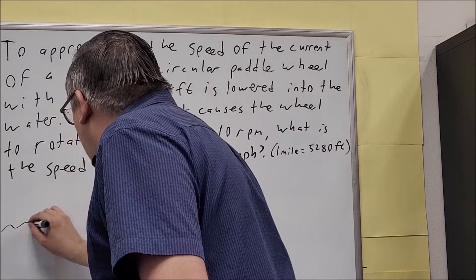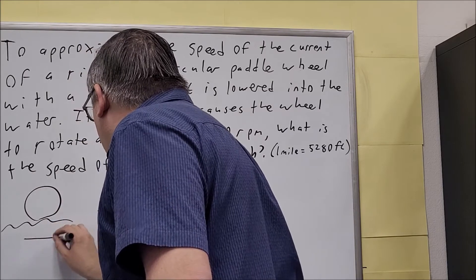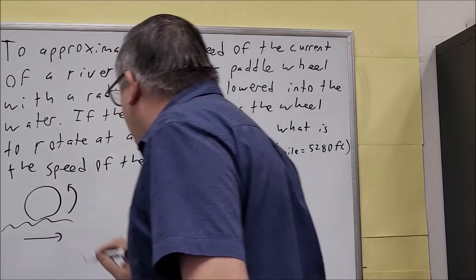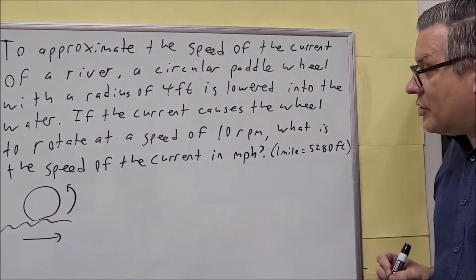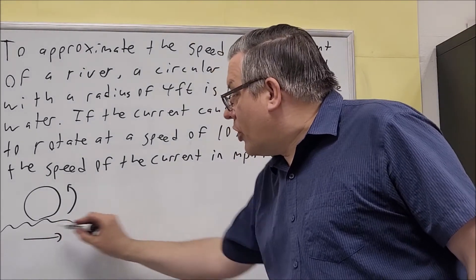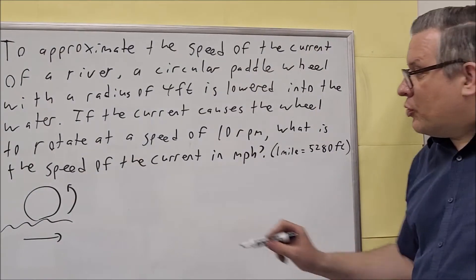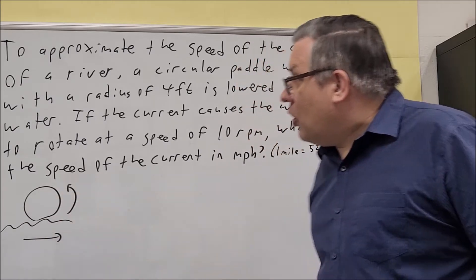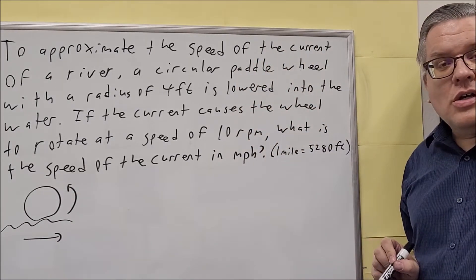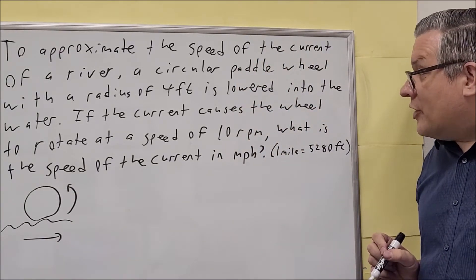Now here's a visual that's happening with this. As the river is flowing this way, it's pushing the paddle wheel and causing it to rotate. So this is the situation that we have on this problem.